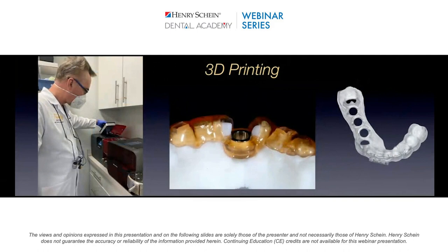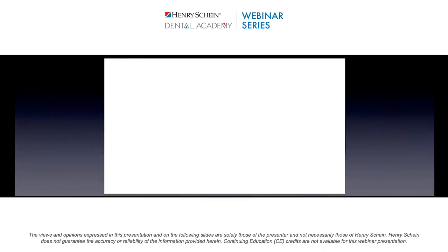We started printing our surgical guides not very long ago. This is a post processor in our office. One thing I really like about Sprint Ray is their post processing — they made the process faster and easier. The printing is a little faster, and don't forget, you don't just take it out of the printer — you have to post-process it. Now we're using pretty much all printed models. Everything is digital. I rarely take an impression. I rarely use a stone model anymore.